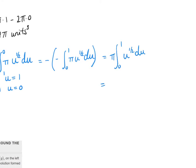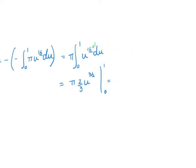Integrating π u^(1/2): we add 1 to the power and divide by that, giving π times (2/3)u^(3/2), evaluated from 0 to 1. This equals (2/3)π times 1^(3/2) minus (2/3)π times 0^(3/2). So the final answer is 2π/3 units cubed.